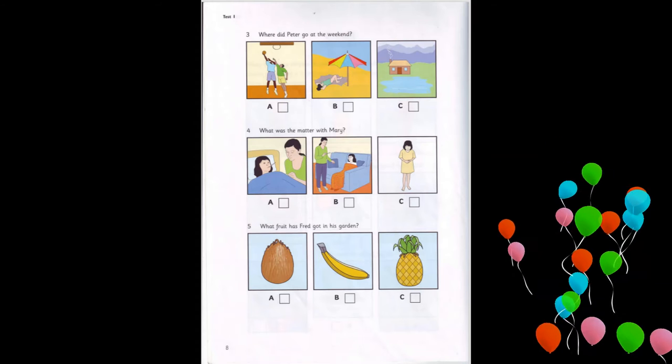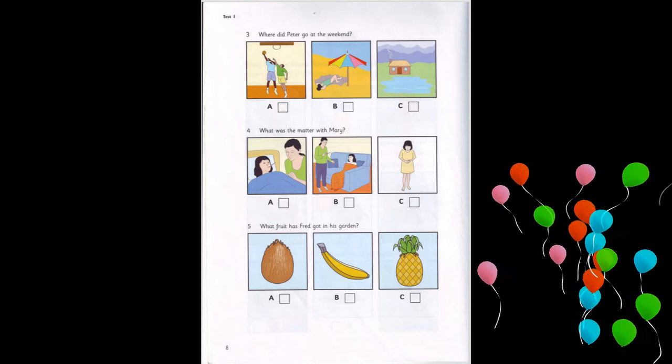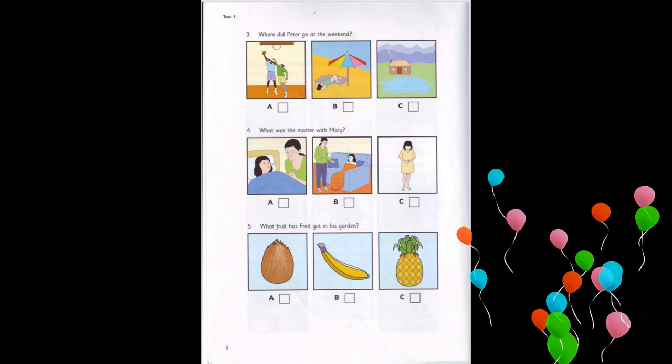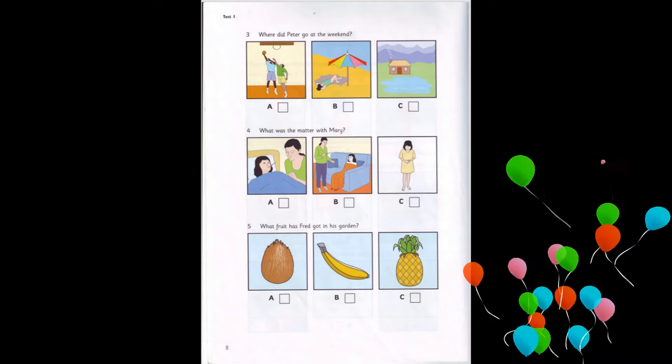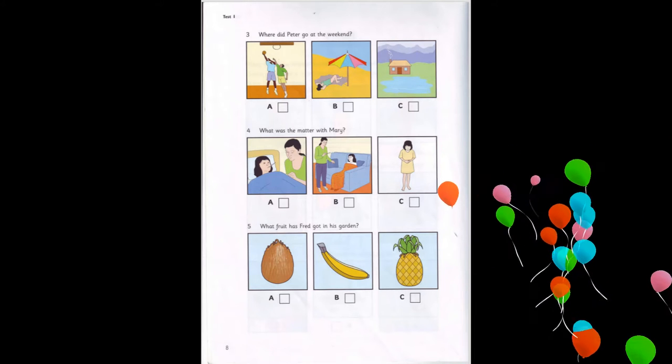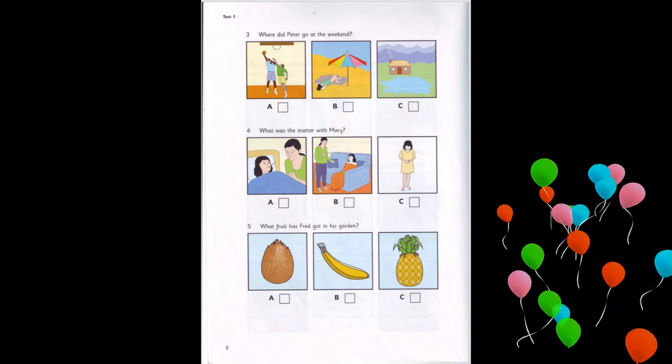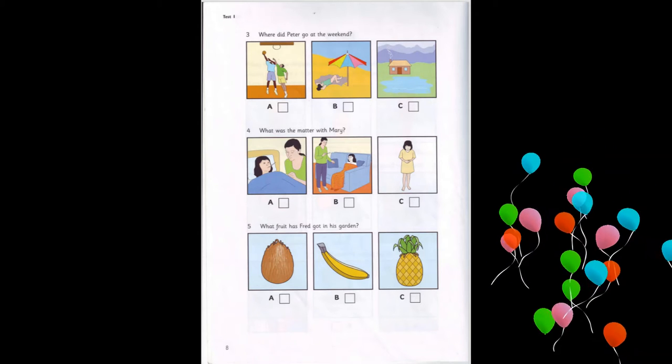Where did your friend Peter go at the weekend? Well, he wanted to go and watch a basketball game. So, did he go? No, he couldn't. His mum wanted to go to the mountains for the weekend, and his dad wanted to go to the sea. Did he go to the sea then? No. His dad had to work, but he went with his mum to the mountains.